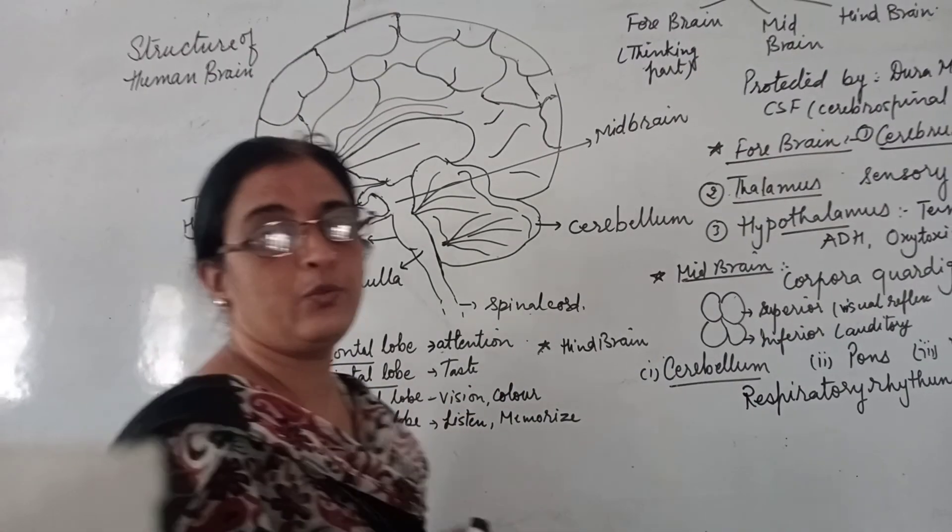The inferior lobes are associated with auditory reflexes. Together these four lobes form the corpora quadrigemina — 'quadri' means four. The midbrain processes motor movements and audio-visual information.